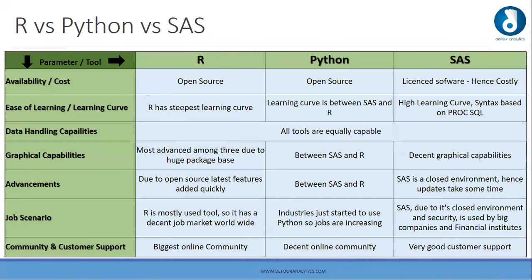In terms of data handling capabilities, all three tools can handle huge amounts of data and convert it into meaningful insights. In terms of capabilities, R is the most advanced among the three, while Python and SAS have a huge package base. Since R and Python are open source, they have better advancements. For job scenarios, R is used worldwide and in big companies and financial institutions. R has the biggest online community, Python has a large digital online community, while SAS has good customer support since it is a licensed software.